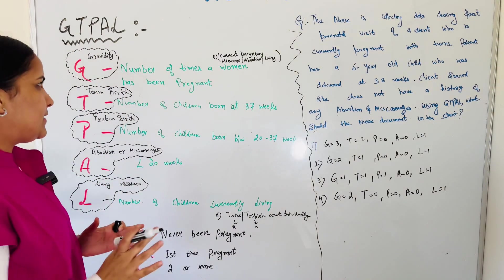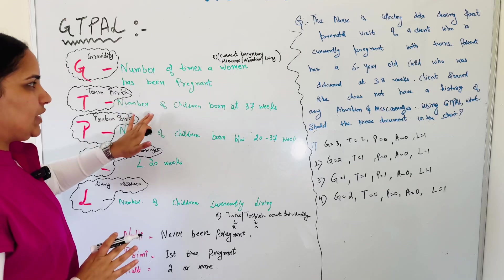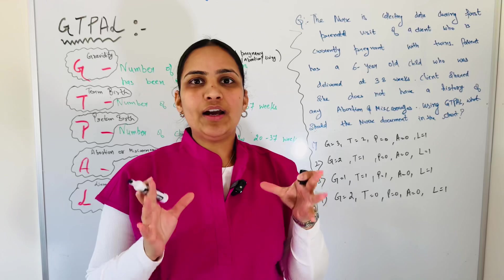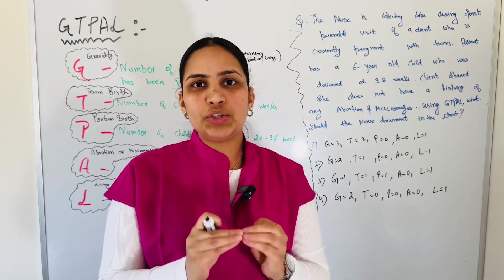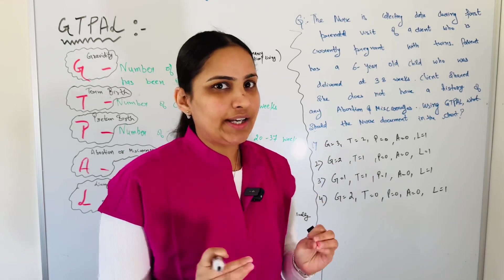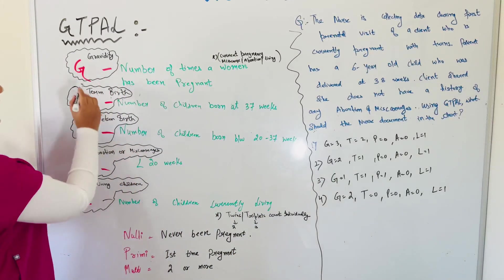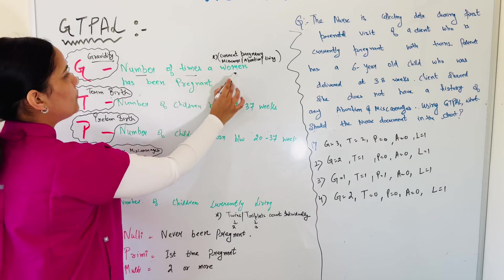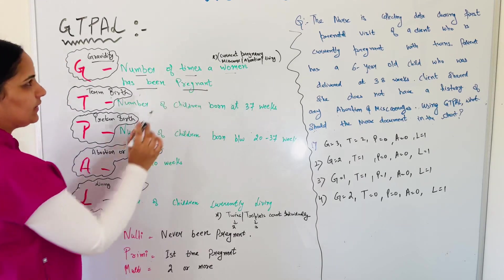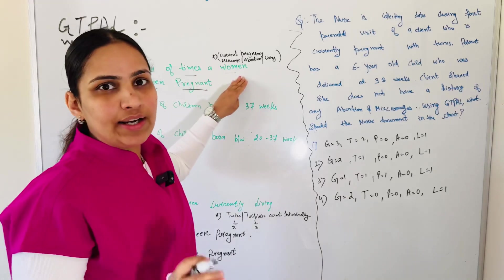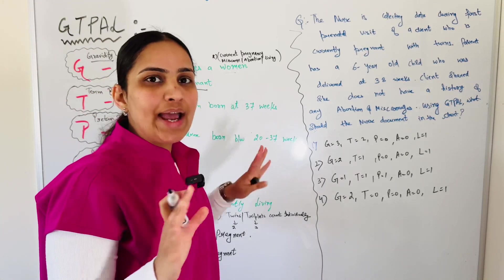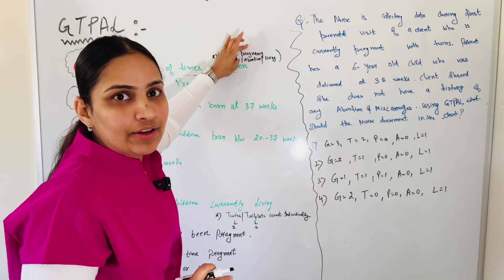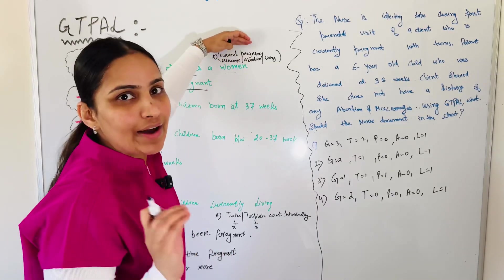First, we will understand what is the meaning of each term and where we use it. So it's basically the meaning of each term when we have a pregnant woman, the history of pregnancy. G is Gravidity. Gravidity is the number of times a woman has been pregnant. Total, including current pregnancy.